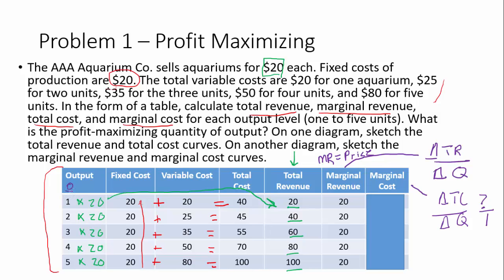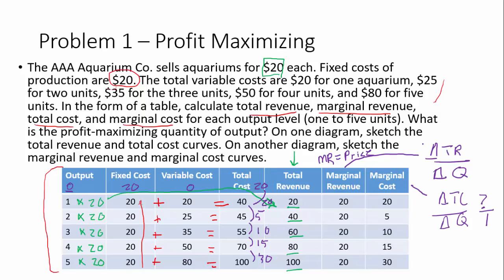Starting at zero: fixed cost is $20, variable cost is zero, total cost is $20. Moving from total cost of 20 to 40, the difference is 20 divided by 1 equals 20. The next one we're going from 40 to 45 — that's a change of 5 divided by 1. Then a change of 10, a change of 15, and a change of 30. That gives us our marginal cost.